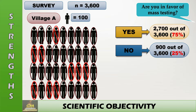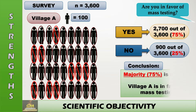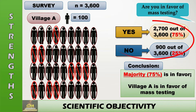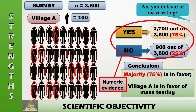Based on these data, the researcher is able to come up with the following conclusion: majority is in favor, therefore Village A is in favor of mass testing. The reason we have these conclusions is because of what we would call numeric evidence, or proof, of the results of the research.